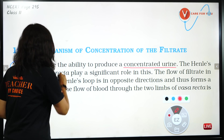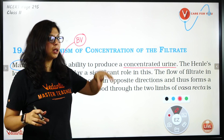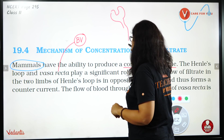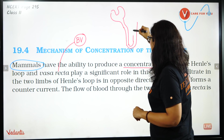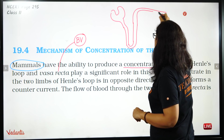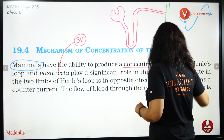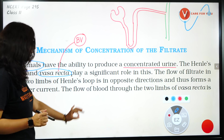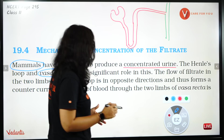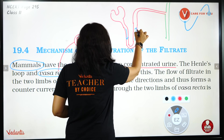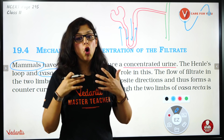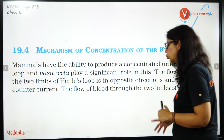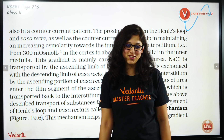Henle's loop and Vasa recta — Vasa recta एक blood vessel है which handles reabsorption from Henle's loop. So Henle's loop includes: Bowman's capsule, Proximal Convoluted Tubule, Descending Limb of Henle, Loop of Henle, Ascending Limb of Henle, Distal Convoluted Tubule, and Collecting Duct. Loop of Henle and Vasa Recta play two significant roles. The flow of filtrate in the two limbs of Henle's Loop and the flow of blood through Vasa Recta are always in opposite directions — Counter Current.